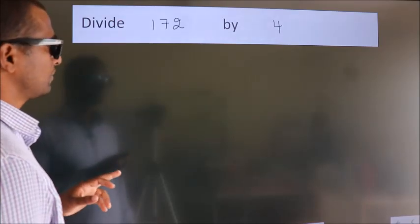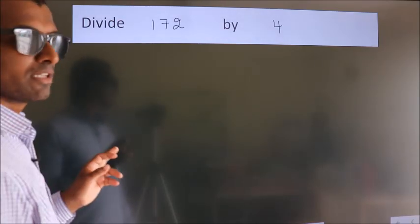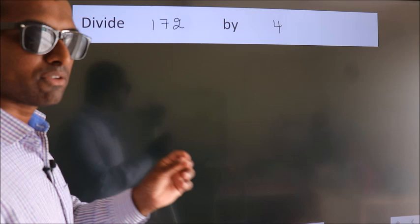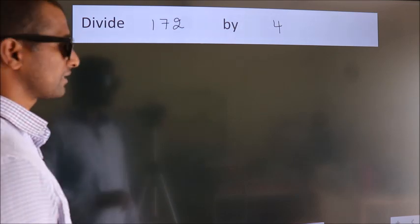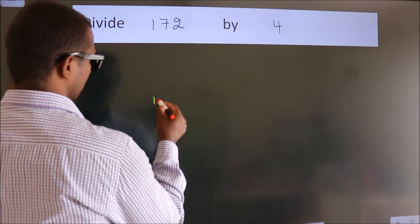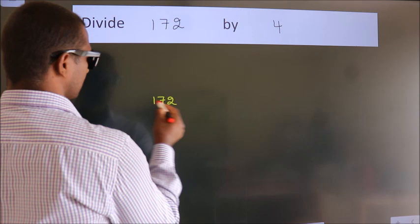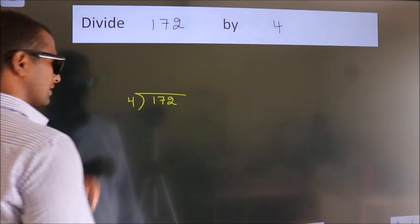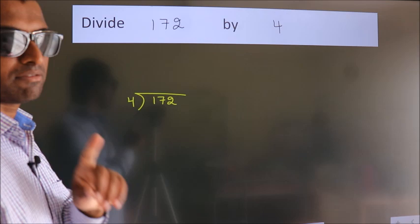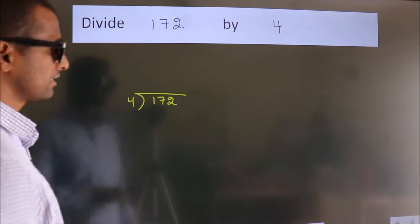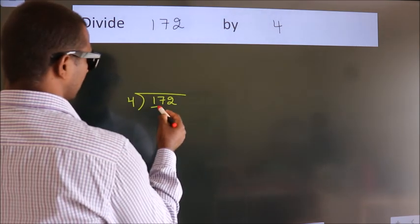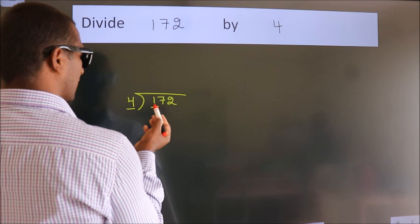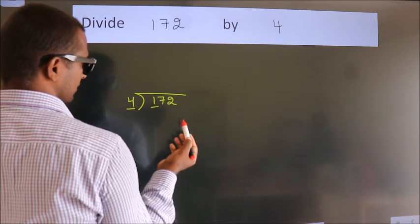Divide 172 by 4. To do this division, we should frame it in this way: 172 here, 4 here. This is your step one. Next, here we have 1. 4 is larger than 1, so we...